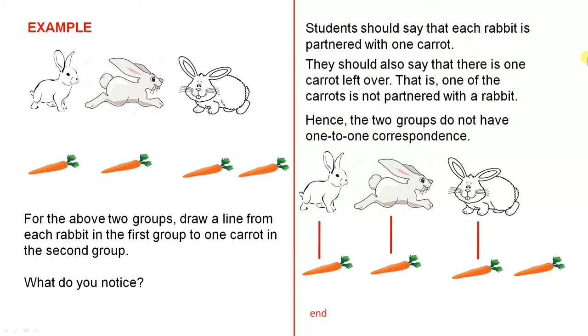Here's another example. For the above two groups, draw a line from each rabbit in the first group to one carrot in the second group. What do you notice? Students should say that each rabbit is partnered with one carrot.